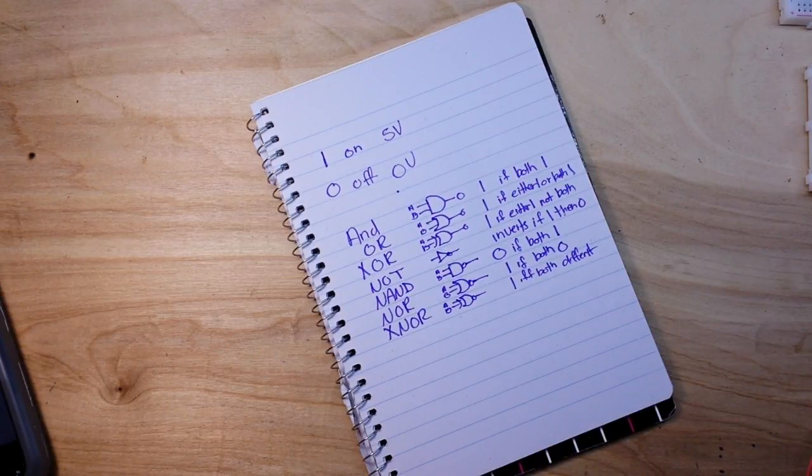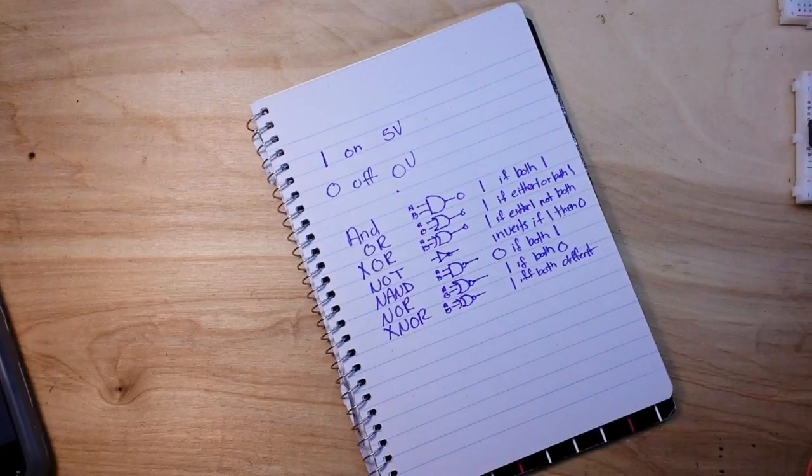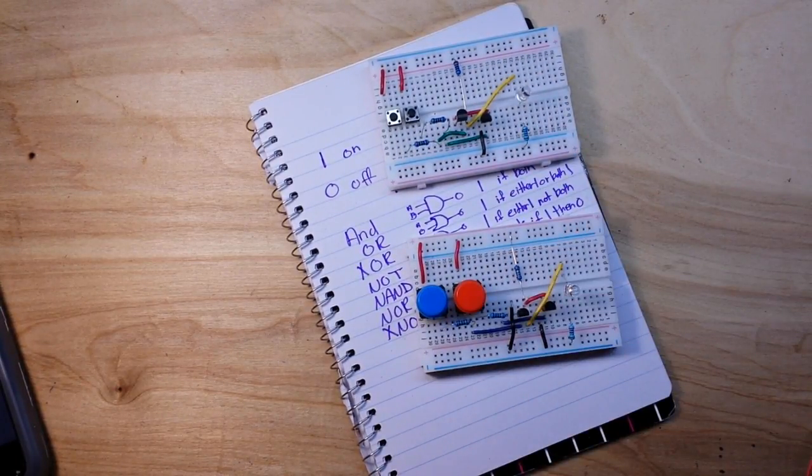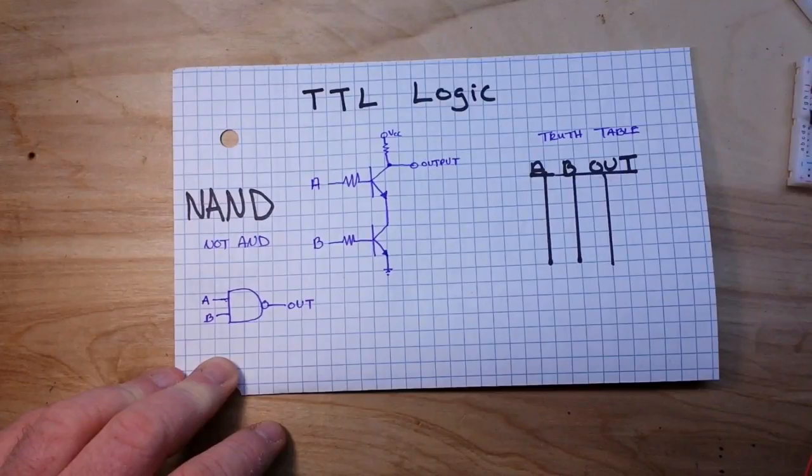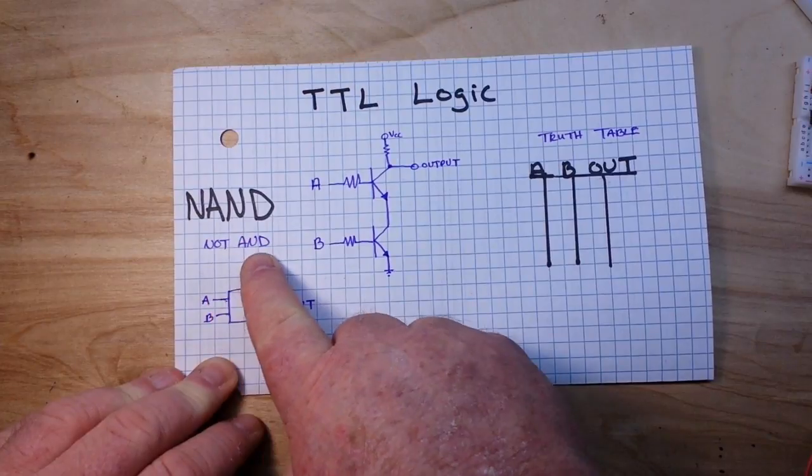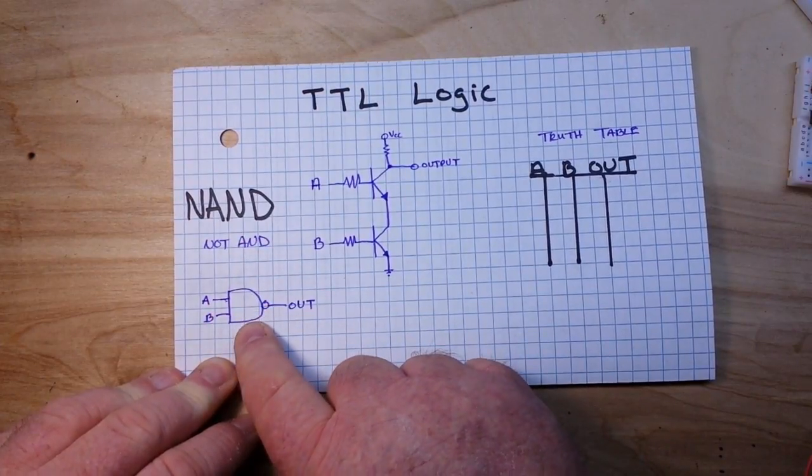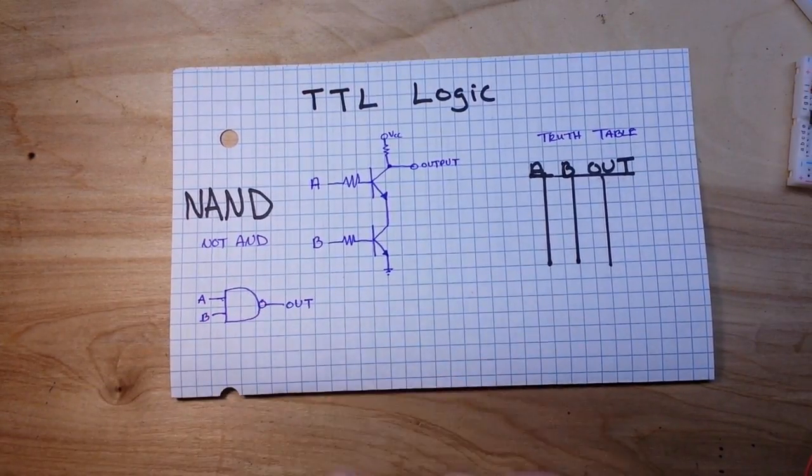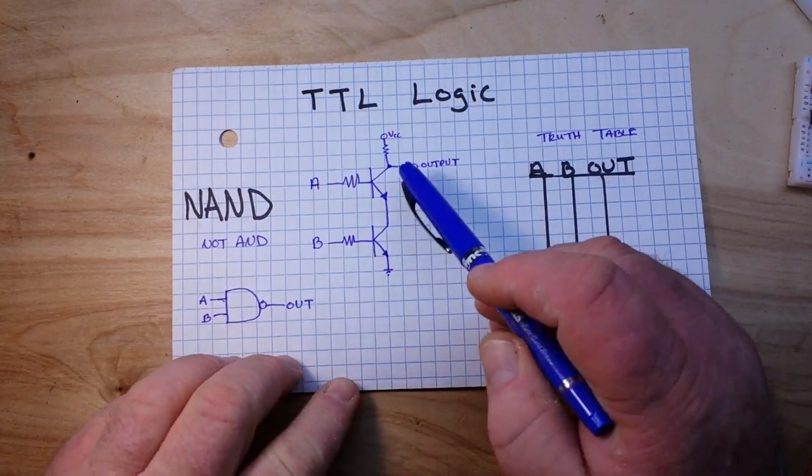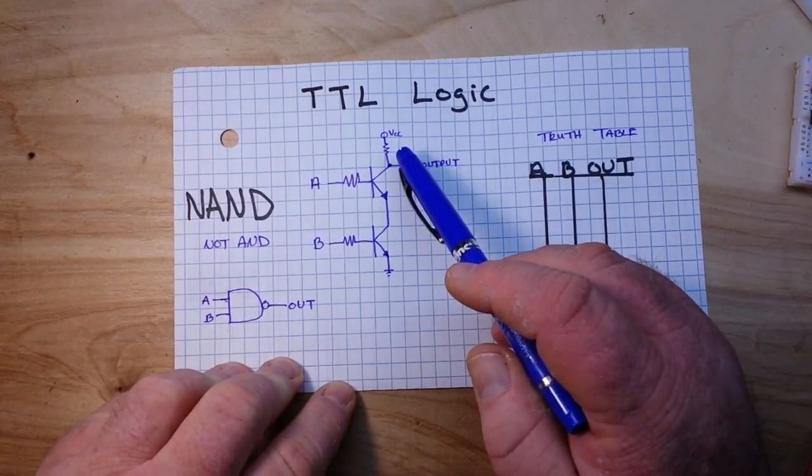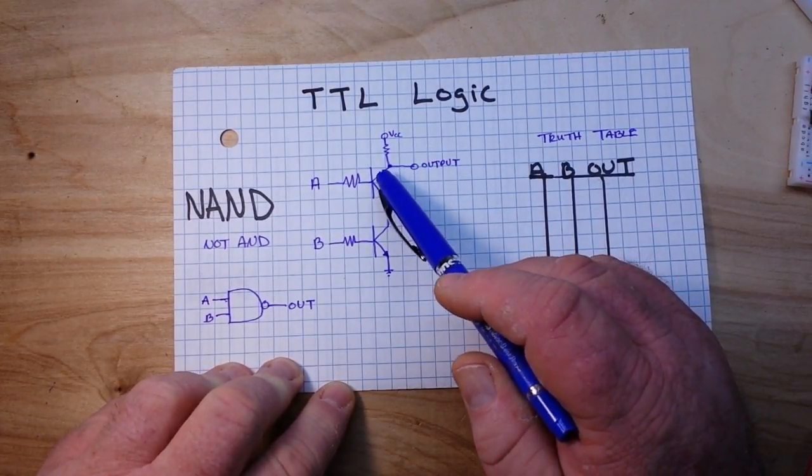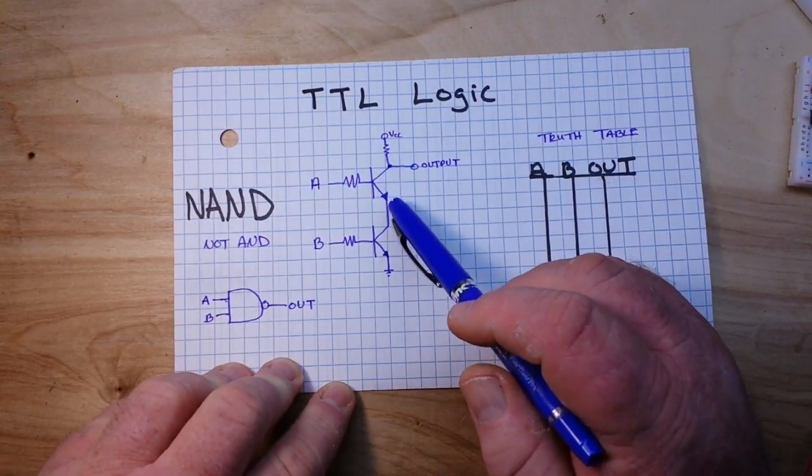So I whipped up two simple circuits here, a NAND gate and a NOR gate, and we're gonna take a look at them. Alright, so first up is our NAND gate which again is the NOT AND, and there's its symbol. Now if we take a look here, here is the circuit layout of a NAND gate using two BJT NPN transistors.